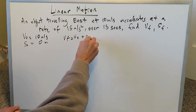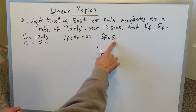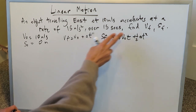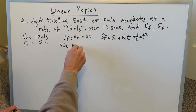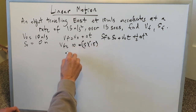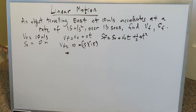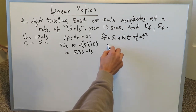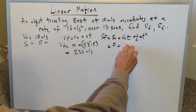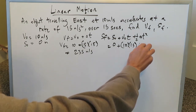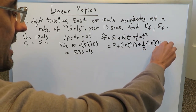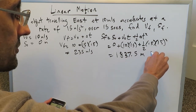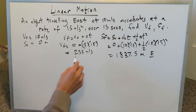Using the algebra method: initial velocity is 10 m/s, initial position is 0 m. Final velocity equals initial velocity plus acceleration times time: 10 plus 15 times 15, giving 235 meters per second. For final position: 0 plus 10 times 15 plus half times 15 times 15 squared. Running through the calculation gives a final position of 1,837.5 meters due east.